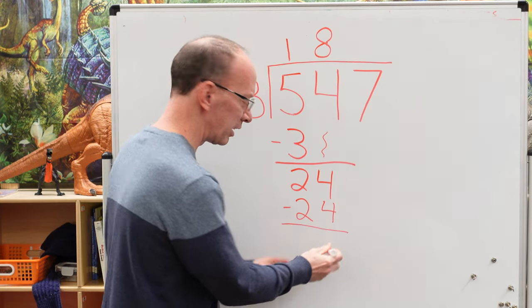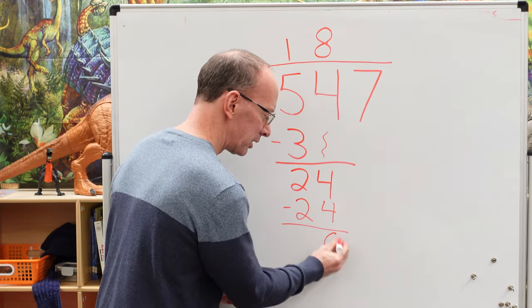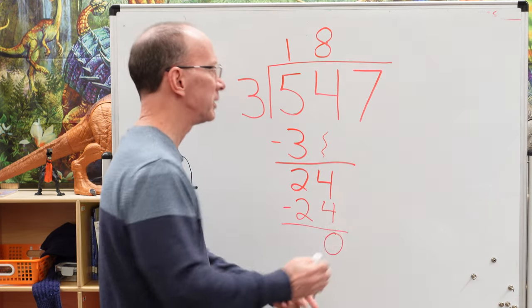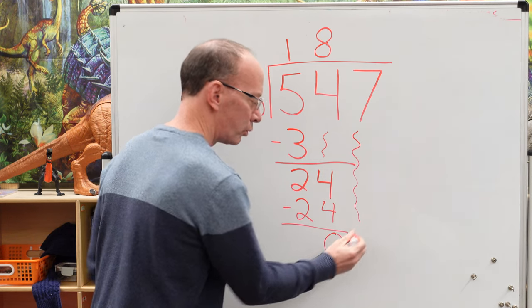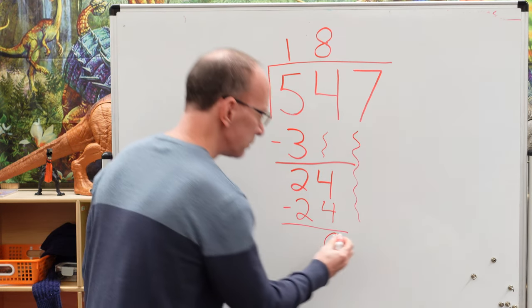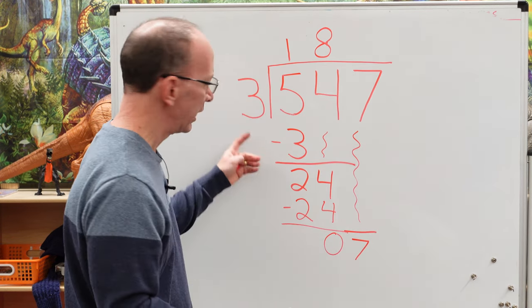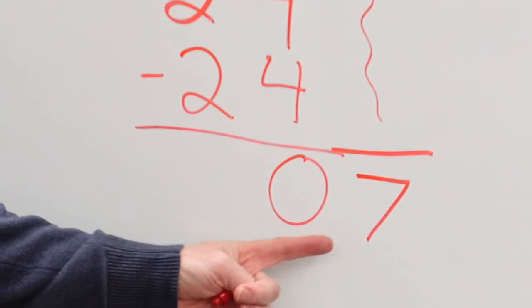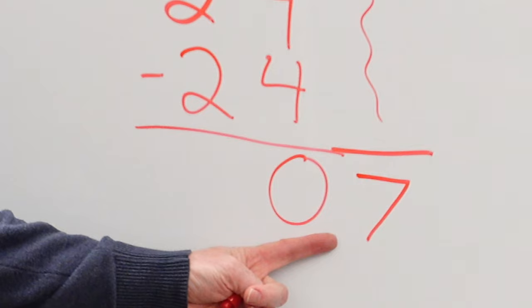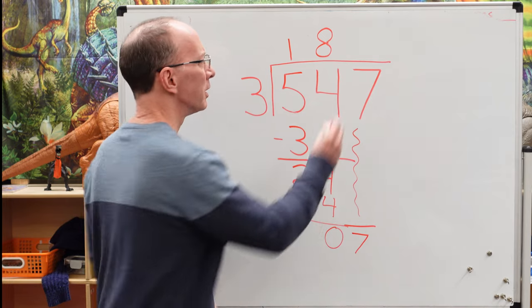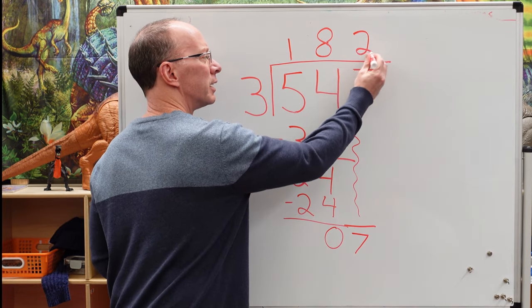If you want to, you can put a 0 there. You don't have to. I'm just going to put it there for today. Now we drop this number down. Push it down. You can add the sound effects if you want to. We got a 7 right there. How many times can I put 3 into 7? 3 times 2 is 6. 3 times 3 is 9. Too big. Let's keep it at 3 times 2. I put the 2 right up here.